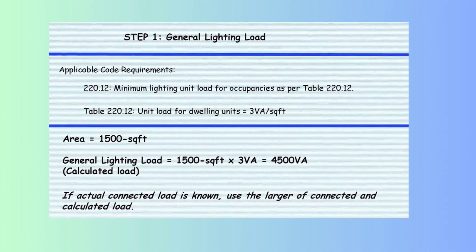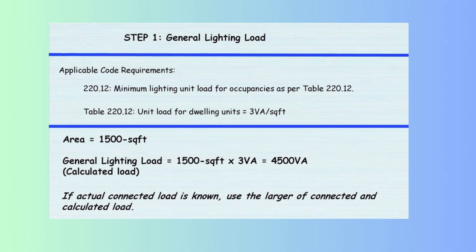In Step 1, we calculate the general lighting load for a single-family dwelling, adhering to the 2023 NEC guidelines. To determine the floor area, measure the total habitable space, excluding open porches, garages, and unused or unfinished areas not adaptable for future use. For this example, the dwelling has a habitable area of 1,500 square feet. According to NEC 220.41, the unit load for dwelling units is 3 volt-amperes per square foot. Calculation: 1,500 sq ft × 3 VA/sq ft = 4,500 volt-amperes.